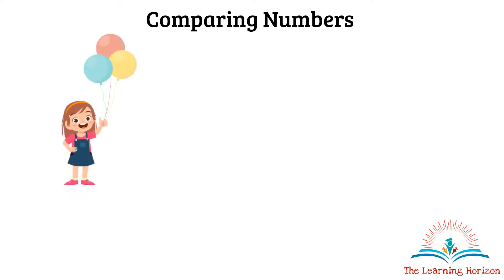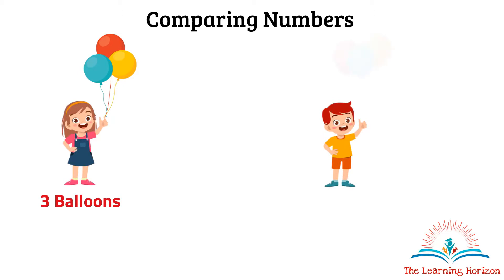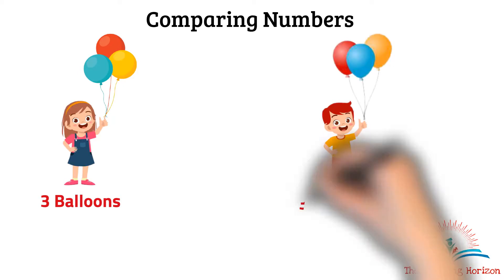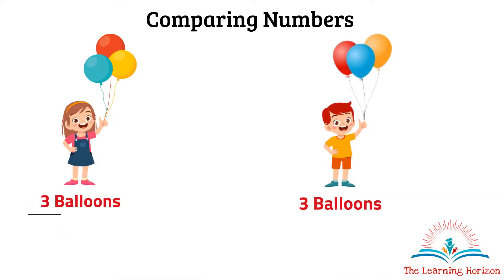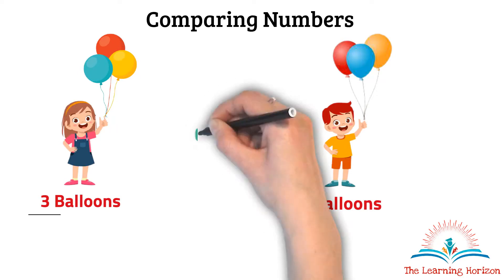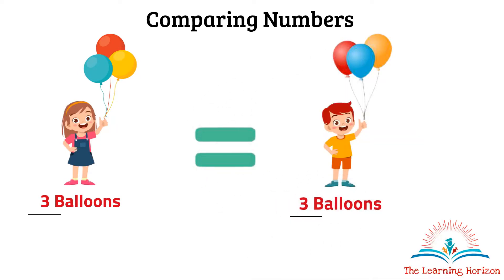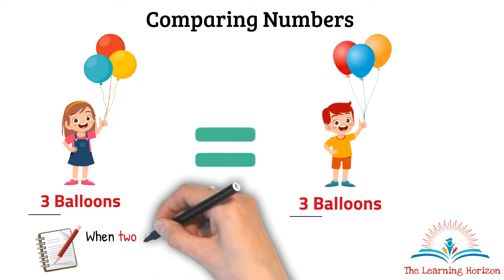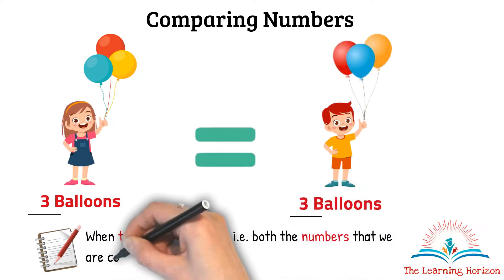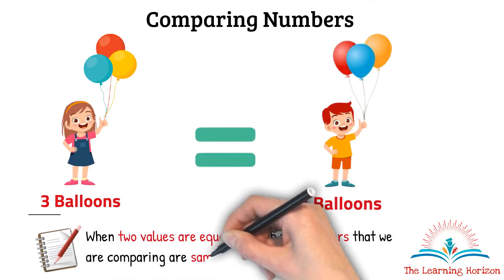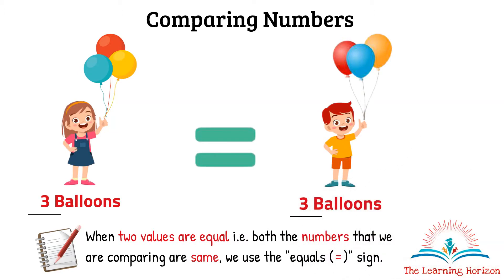Sia has 3 balloons and Arjun also has 3 balloons. They have an equal number of balloons, so again we will use the equal sign. When two values are equal — that is, both the numbers we are comparing are the same — we use the equal sign.